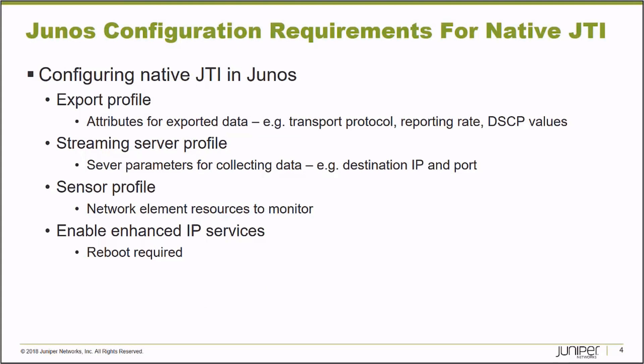The configuration required on a Junos platform is an export profile, which identifies the platform itself — such as the source address that the platform should use in the packets streamed toward the telemetry collector, the Northstar Controller — what protocol format should be used, what transport layer protocol, and then a streaming server profile should be defined. Actually, three streaming server profiles.